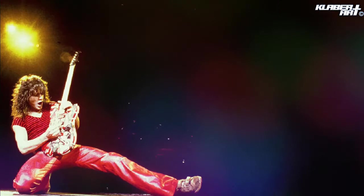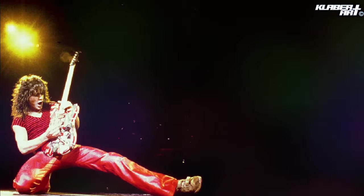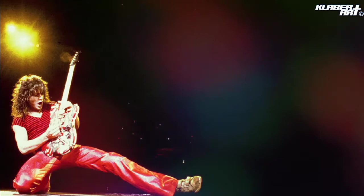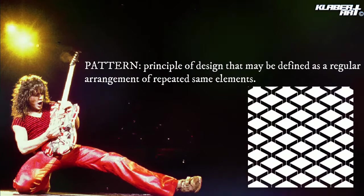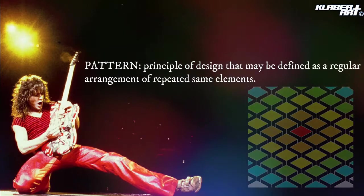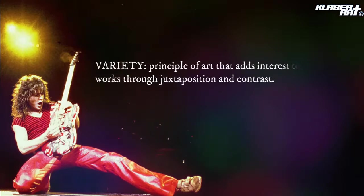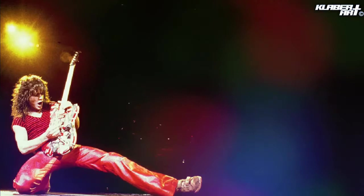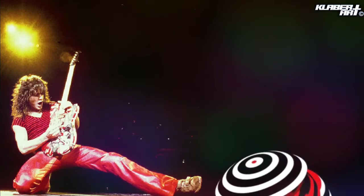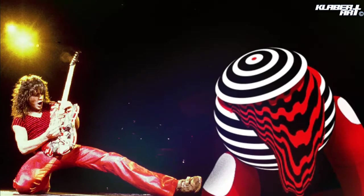What are the elements and principles of art? With every project I try to infuse a couple of those concepts, and for today we'll be using two principles of design: pattern and variety. Pattern is the regular arrangement of repeated elements such as lines, shapes, and colors repeated over and over in a composition. Variety adds interest to an artwork through juxtaposition and contrast — straight lines next to curvy lines, or organic shapes next to geometric shapes. That kind of contrast adds variety.